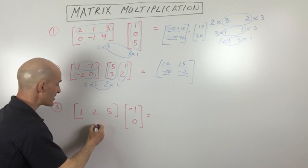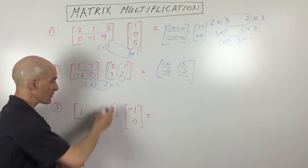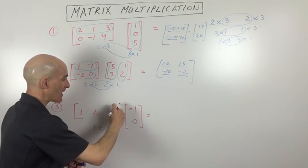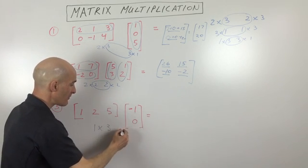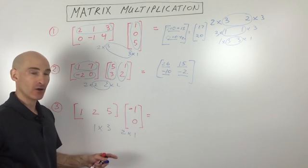So let's take a look at this last one. Now this one has dimensions of one row by one, two, three columns. This one has two rows by one column. Oh, what do we notice?